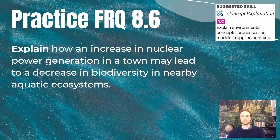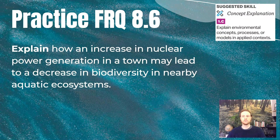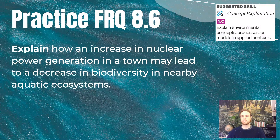For practice FRQ 8.6, explain how an increase in nuclear power generation in a town may lead to a decrease in biodiversity in nearby aquatic ecosystems.